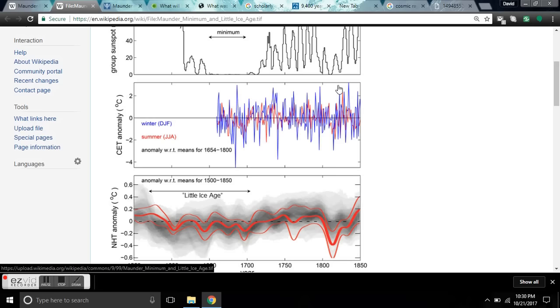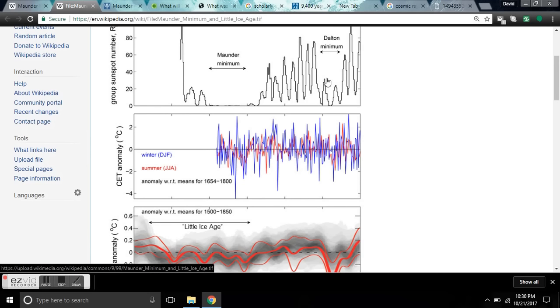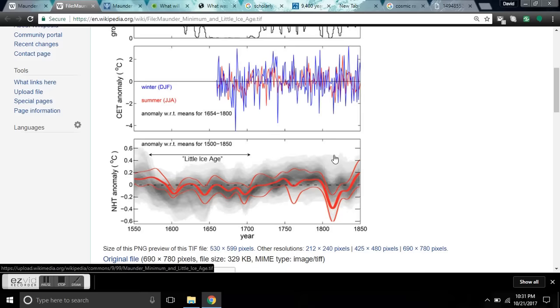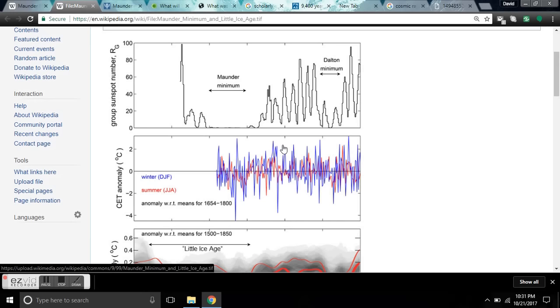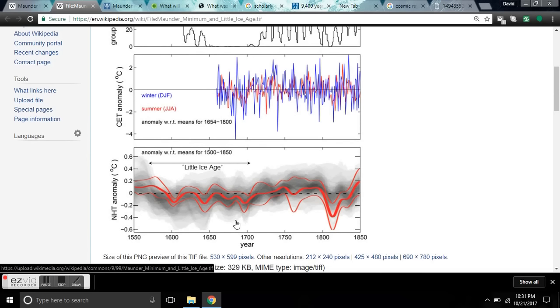So you can see that a drop in sunspots here that happened during the Dalton Minimum also coincides with a huge drop in global temperature anomaly in both graphs. So there's a direct relationship between the number of sunspots and the temperature. And then during the Maunder Minimum here, this temperature falls way below baseline here. Look at how low this spike goes, coinciding probably with this area below baseline in here.